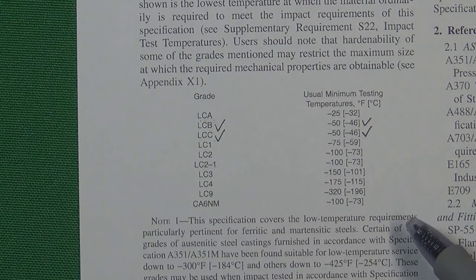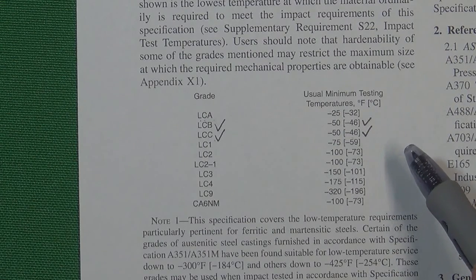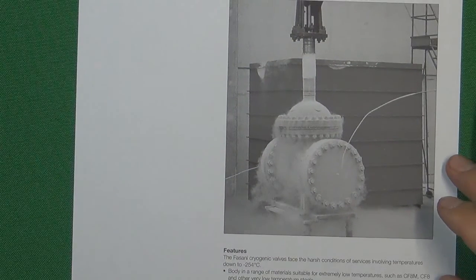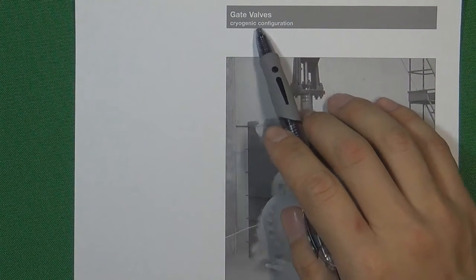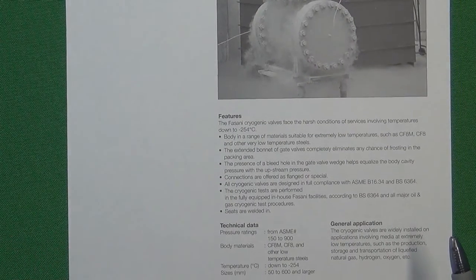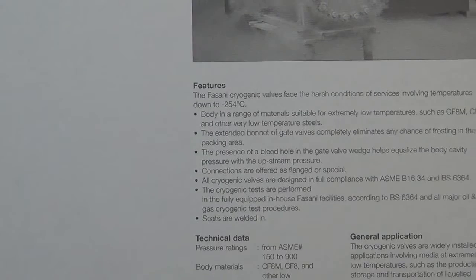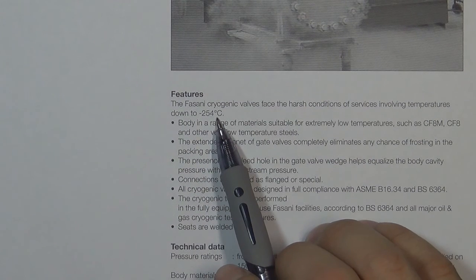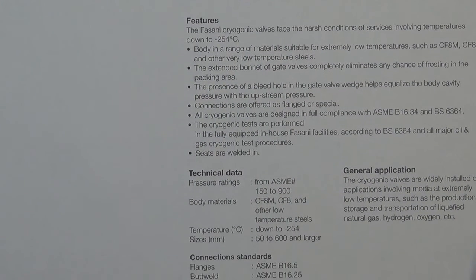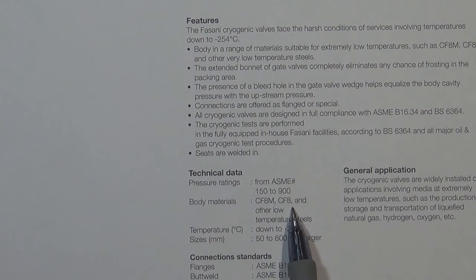So if your flow control system operates at a temperature lower than minus 46 Celsius, what kind of material will be safe? To answer that question, let's look at a catalog here. This is a gate valve manufacturer's catalog offering a cryogenic gate valve. Cryogenic means the flow control system is going to control liquid gas at very low temperatures — according to this catalog, down to minus 254 Celsius degrees. The body material chosen is CF8M and CF8, so stainless steel is the best choice for a really low temperature environment.